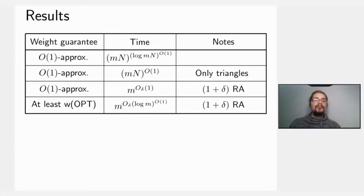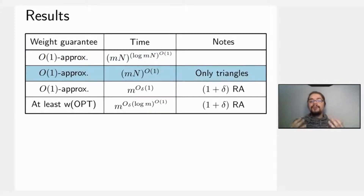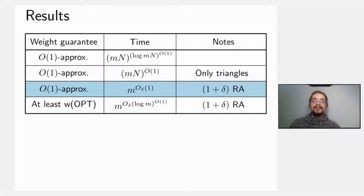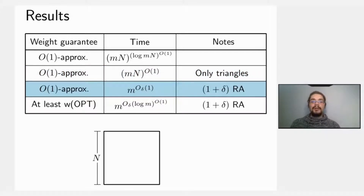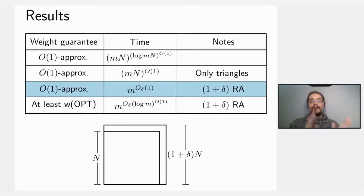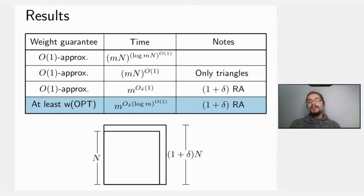Here is a quick view of our results. First, we obtain a constant approximation algorithm in quasi-polynomial time for the general setting of convex polygons. If we restrict to triangles, we obtain a constant approximation in polynomial time. We also have results under 1+δ resource augmentation — meaning we stretch the knapsack by a factor of 1+δ and compare to the original optimum — achieving a constant approximation in polynomial time for general convex polygons, and optimal weight in quasi-polynomial time.